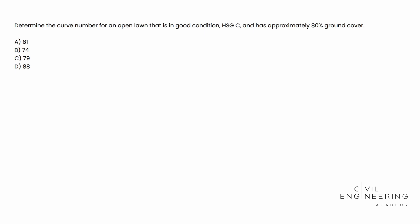Here's what the question says: Determine the curve number for an open lawn that is in good condition, hydraulic soil group C — that's what HSG stands for — and has approximately 80% ground cover.